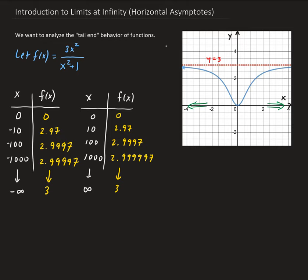Just to remind you of something from pre-calculus: the function may cross the horizontal asymptote, but in the long run it won't. If it does cross, that will happen somewhere close to zero, or near zero — but it won't do that as we approach infinity or negative infinity.